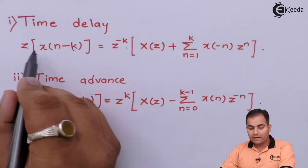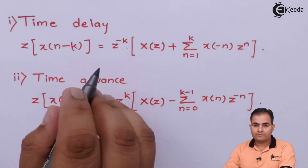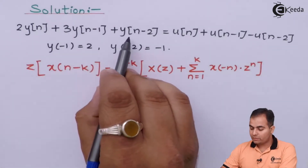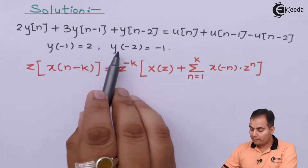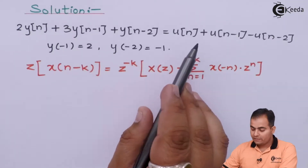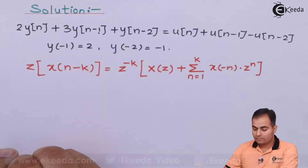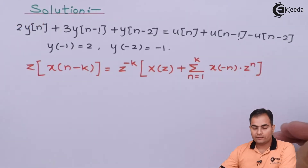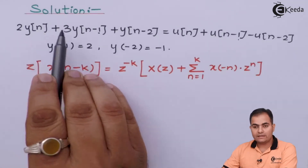We will use the time delay formula in our question because all the functions y(n) as well as the step response are delayed. In the first part, the K value is 1, and in the second part, K is 2. Similarly, on the right-hand side, K is 1 for the first part and K is 2 for the second. We will apply Z-transform on both sides.